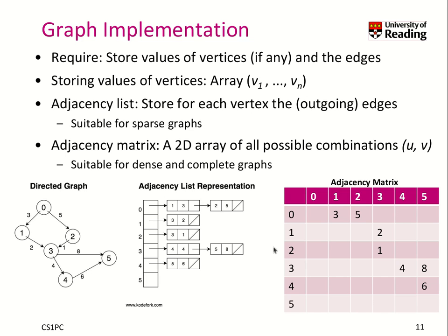There's another representation that is quite popular and easy to see — the so-called adjacency matrix. It is a 2D array of all possible combinations between u and v, so between two vertices. The same directed graph can be represented in the adjacency matrix as shown here: from node 0 we can go to node 1 with weight 3, and from node 0 we can go to node 2 with weight 5, and similarly for all other nodes. You can see already that this matrix is very sparsely populated — there are only a few entries in this little graph.